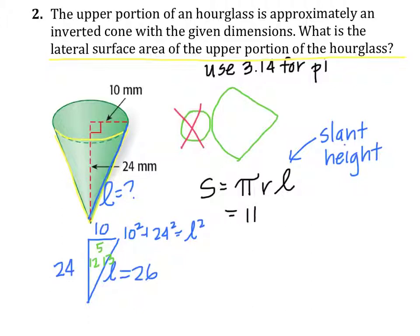So now I have all the numbers I need to find the surface area. It's equal to pi times the radius, which is 10, times the lateral, or slant height, excuse me, which is 26. And that's equal to 260 pi. Now remember, I like to keep my problems in terms of pi until I'm ready to do my final calculation.